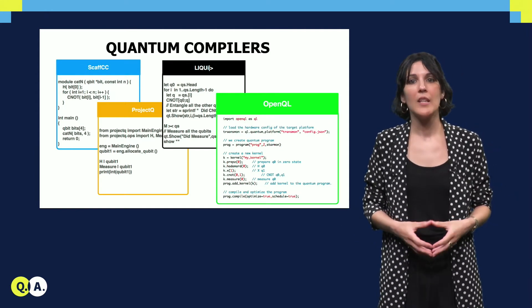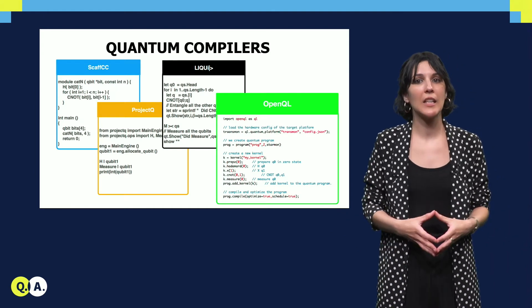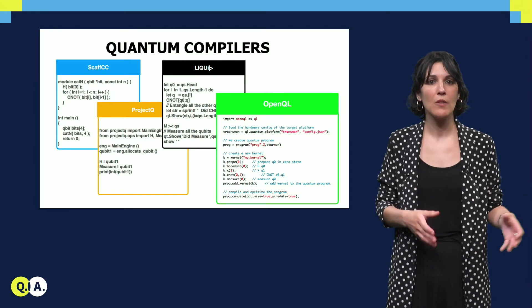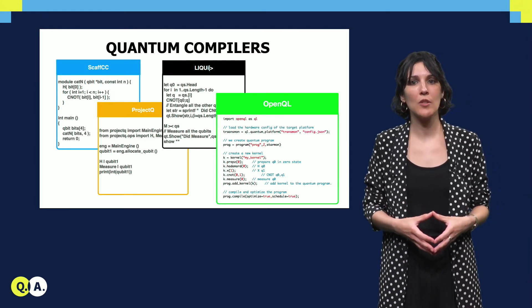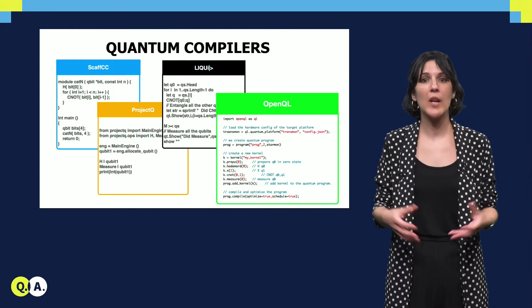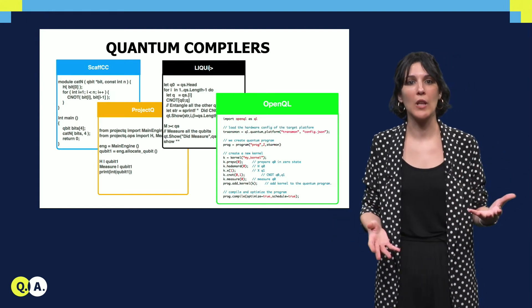All of these compilers generate a kind of quantum assembly language that can target different backends. Those backends can be a simulator used to simulate quantum computation, or it can be real quantum processors such as the one that we are developing here at QuTech, or the ones from IBM, Rigetti or Google.